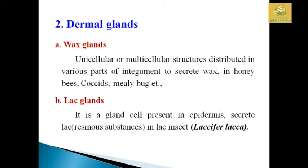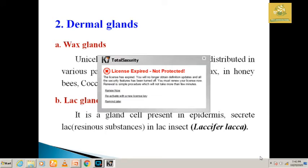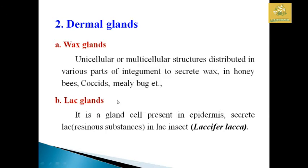The dermal glands are comprised of wax glands. They are said to be unicellular as well as multicellular structures distributed in various parts of the integument to secrete wax. They are present in honeybees, coccids, as well as mealy bugs. These are some examples of wax gland-producing insects.